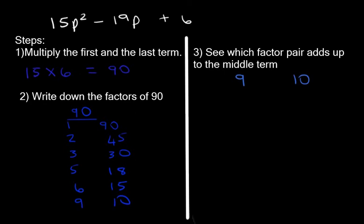But what should the signs be? It's a type 1 trinomial because the last term is positive. And if the last term is positive, both brackets must have the same sign as the middle term, which is negative. And if we add up negative 9 and negative 10, does it give us negative 19? Yes, it does.